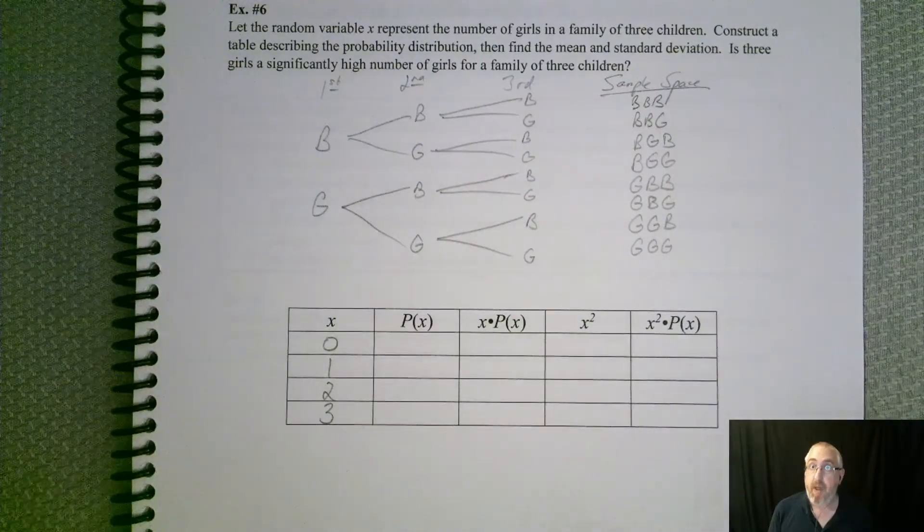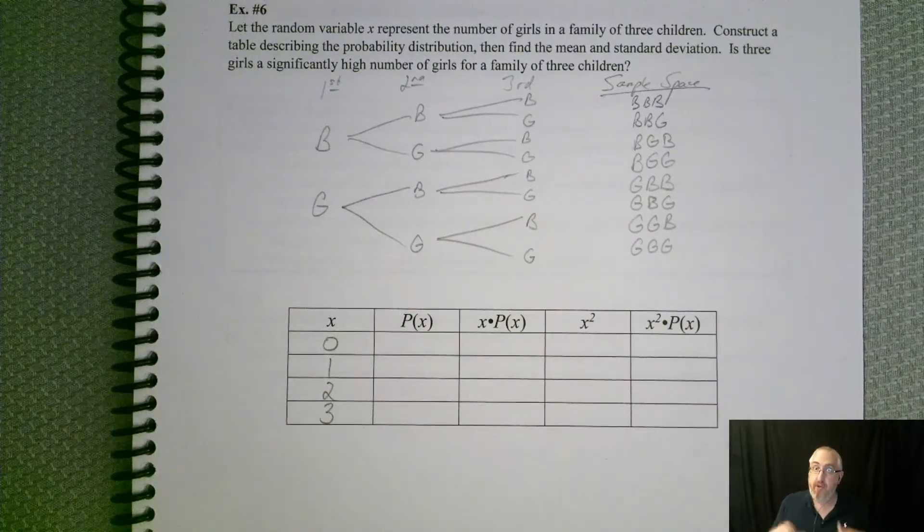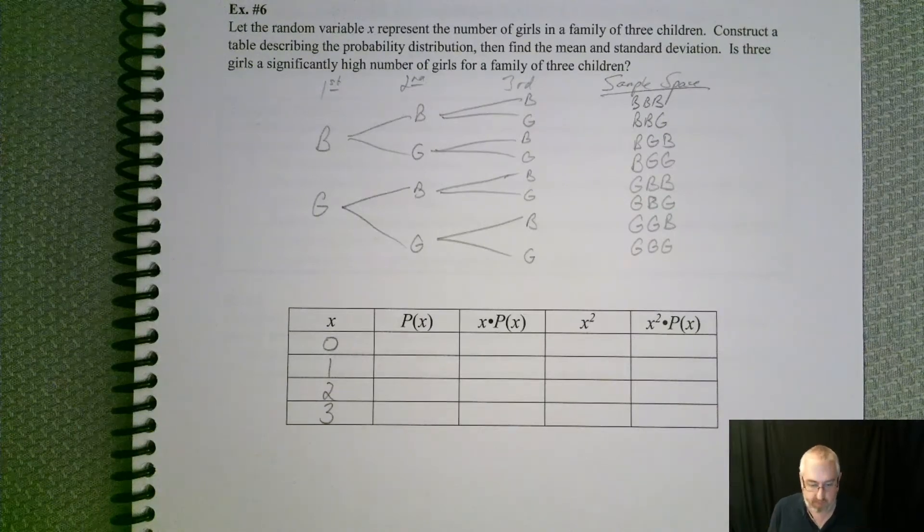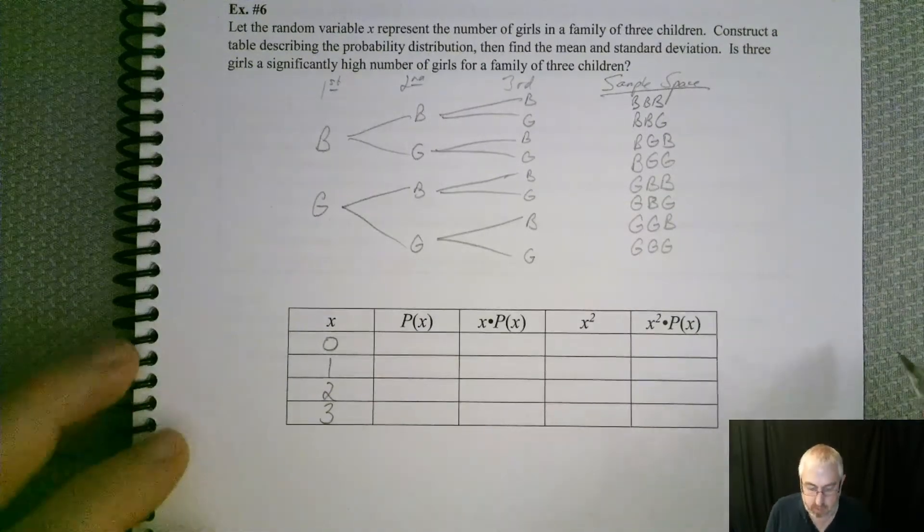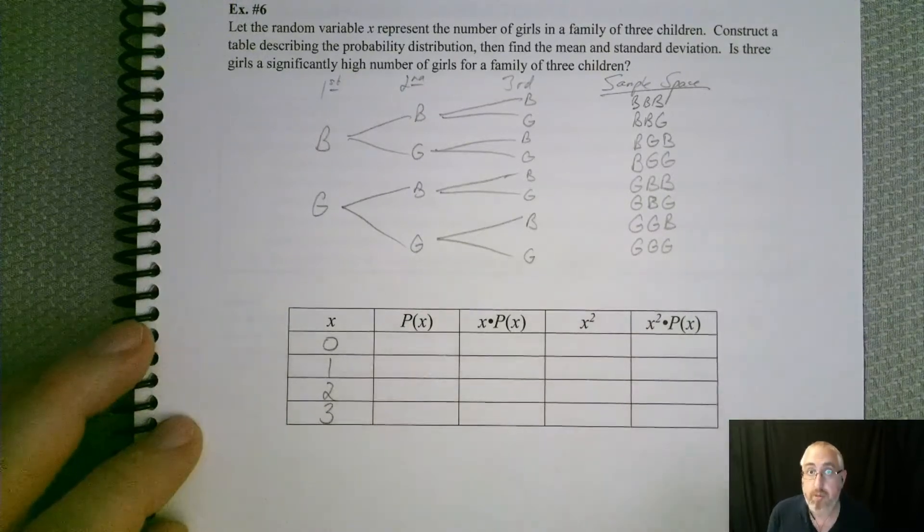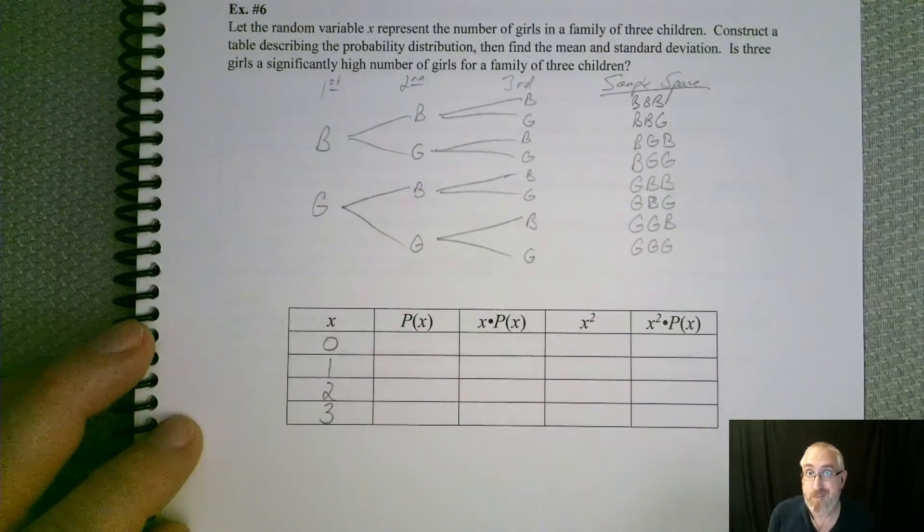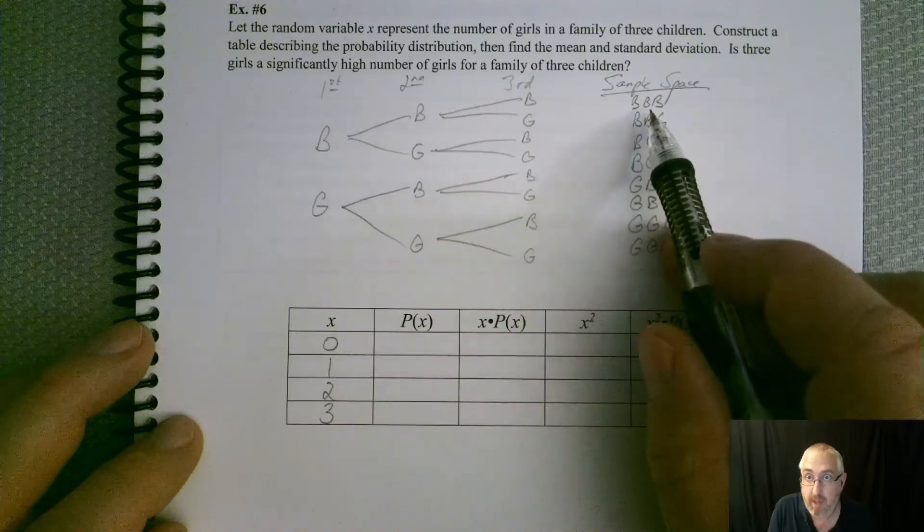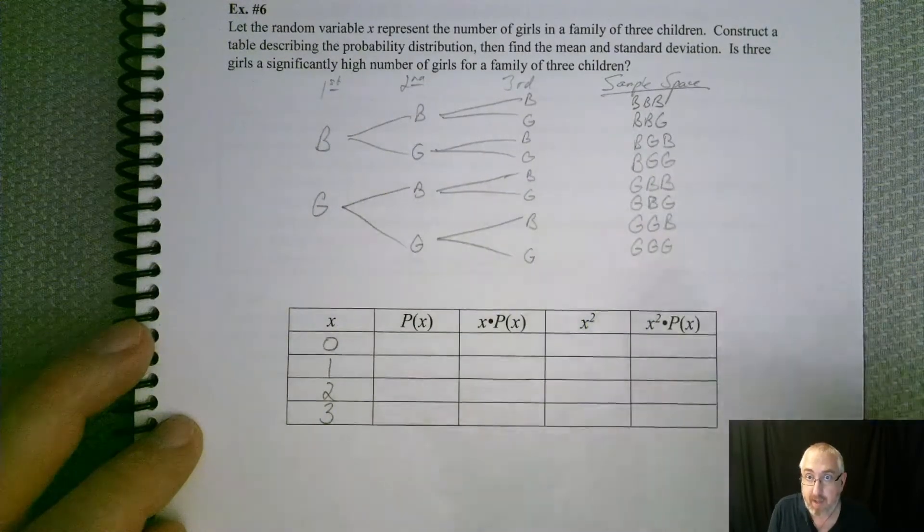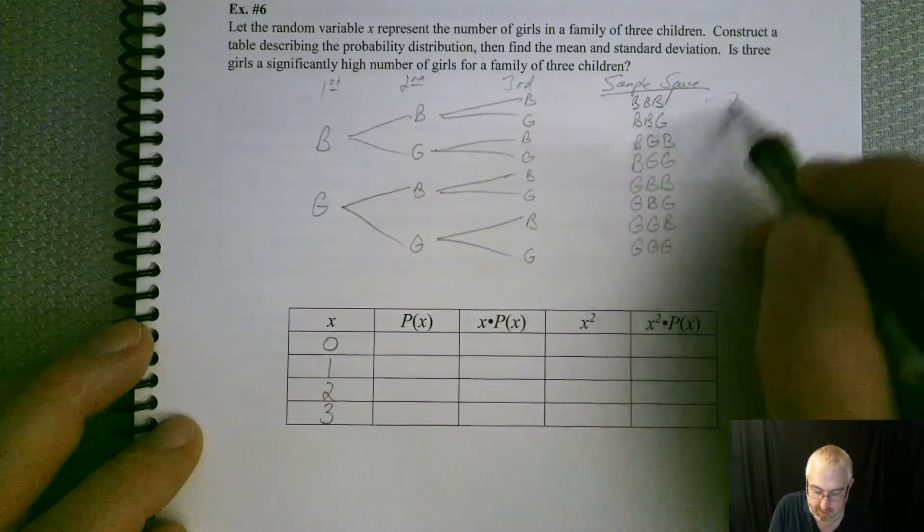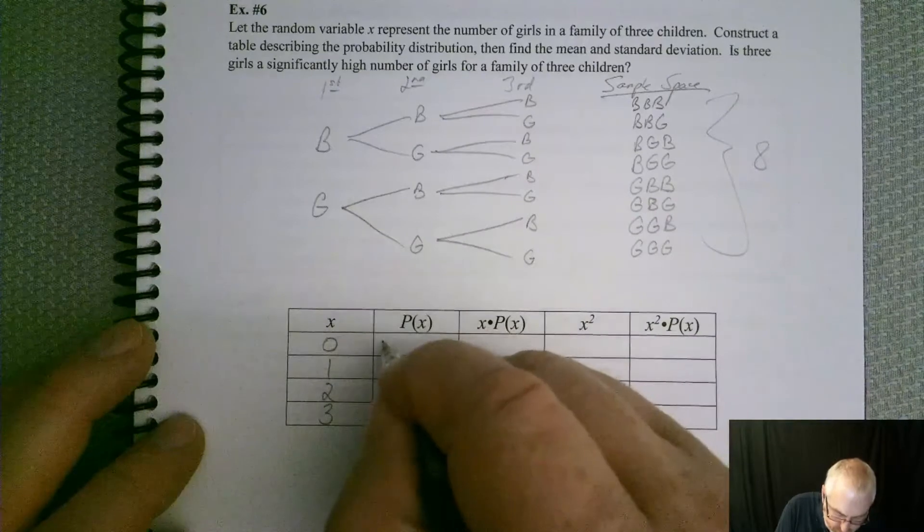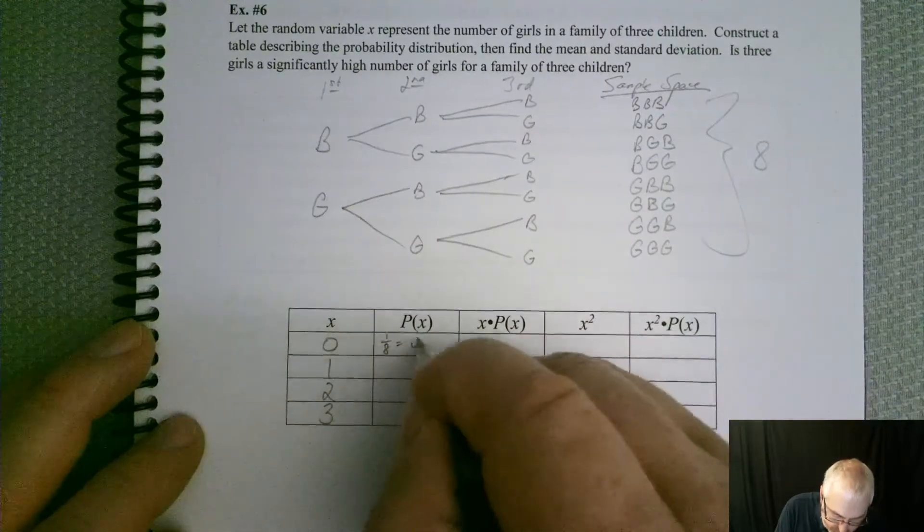All right, so now we have our entire sample space, which is all possible combinations for this situation. So what's the probability of getting zero girls? Well, there's one case where they're all boys out of how many? Out of eight, right? So one out of eight, which is 0.125.